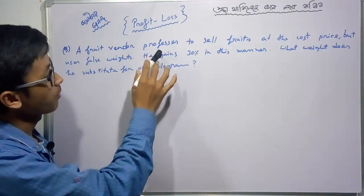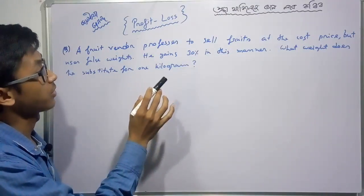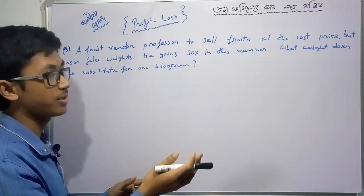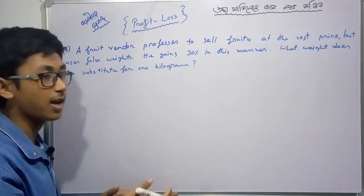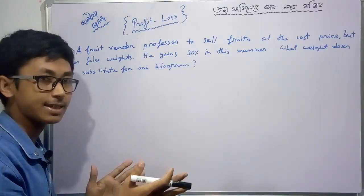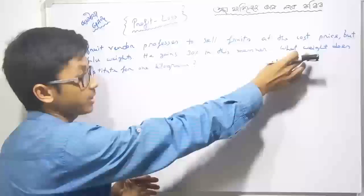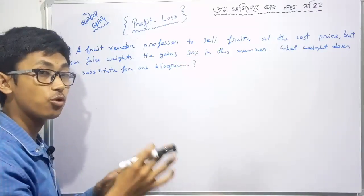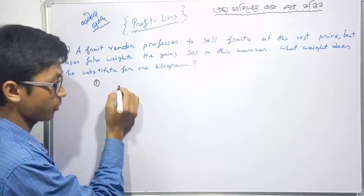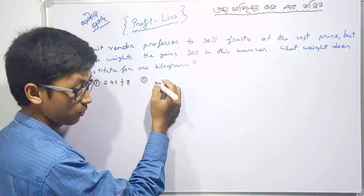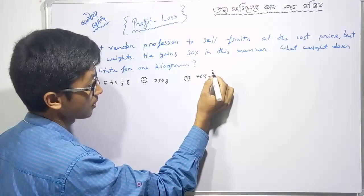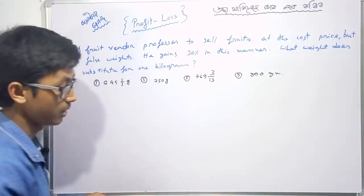Next question: A dishonest fruit vendor professes to sell fruits at cost price but uses false weights. Instead of 1000 grams, he gains 30% profit. What weight does he substitute for one kilogram? The options are: 645 and 1/3 grams, 750 grams, 769.13 grams, or 800 grams.